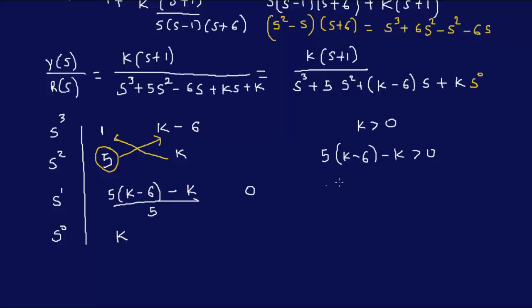So I have 5K minus 6 minus K got to be positive. So I can solve for this: I have 4K, 5K minus K that's 4K. So 4K minus 6 greater than 0, which means K is greater than 30 over 4, which means K is greater than 15 over 2. And so this is also positive as well.